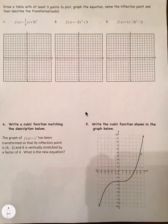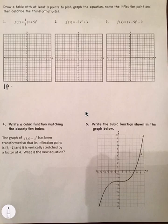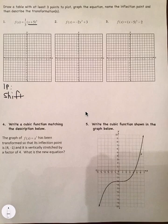The problem asks us to draw a table with at least 3 points, graph the equation, name the inflection point, and describe the transformations. Looking at the equation, I identify the inflection point. I can see it shifts to the left 5, and the a value of one-third means it's vertically compressed by one-third.